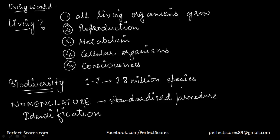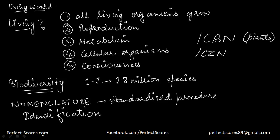Lots of organisms keep getting discovered day by day and we need organizations that help in naming them. Two very important organizations are the ICBN, which stands for International Code for Botanical Nomenclature — as the name suggests, it's for plants or flora. And then we have ICZN, which is International Code of Zoological Nomenclature. These organizations are based on agreed principles and criteria so that naming is done through a proper channel.